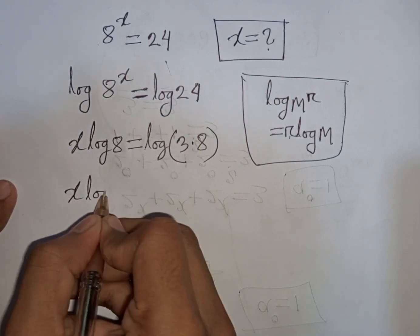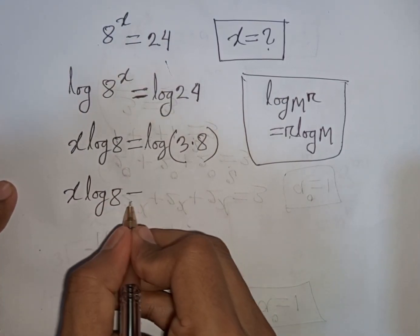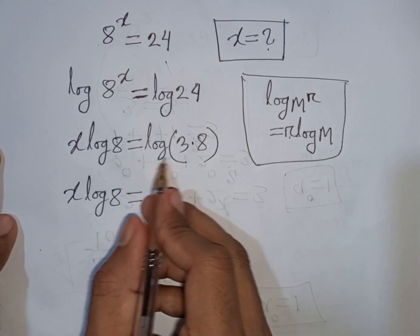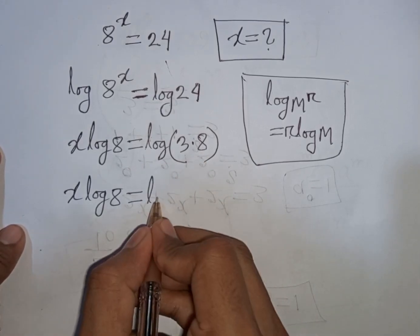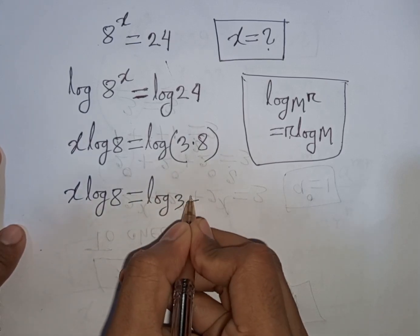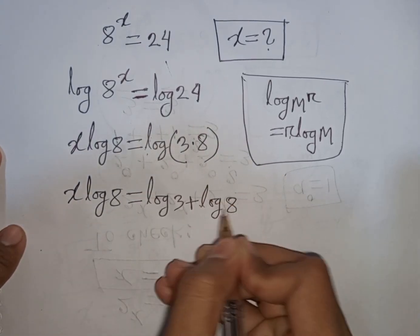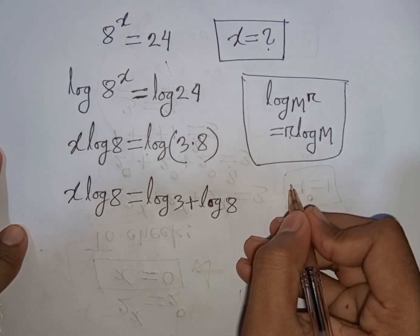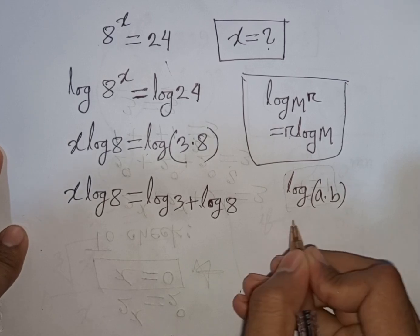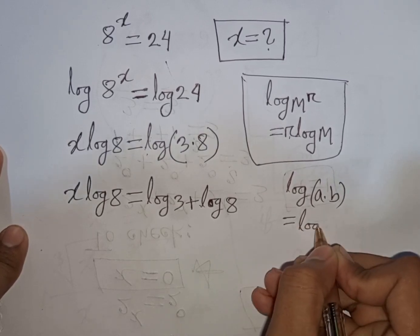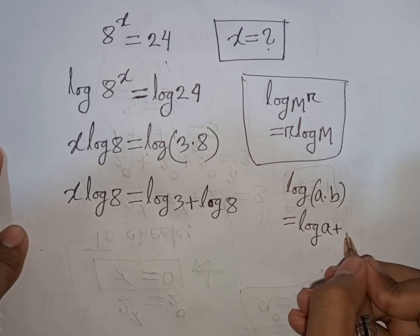We have x log 8 is equal to log of 3 times 8. That means it will be log 3 plus log 8, according to the formula that log of a times b is equal to log a plus log b.